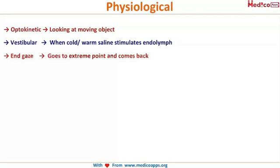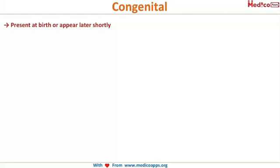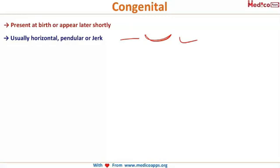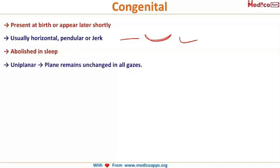Congenital nystagmus is present at birth or appears shortly after. It is usually horizontal, pendular or jerk type, and is absent during sleep — abolished when the baby sleeps. It is uniplanar: the plane remains unchanged in all gazes.